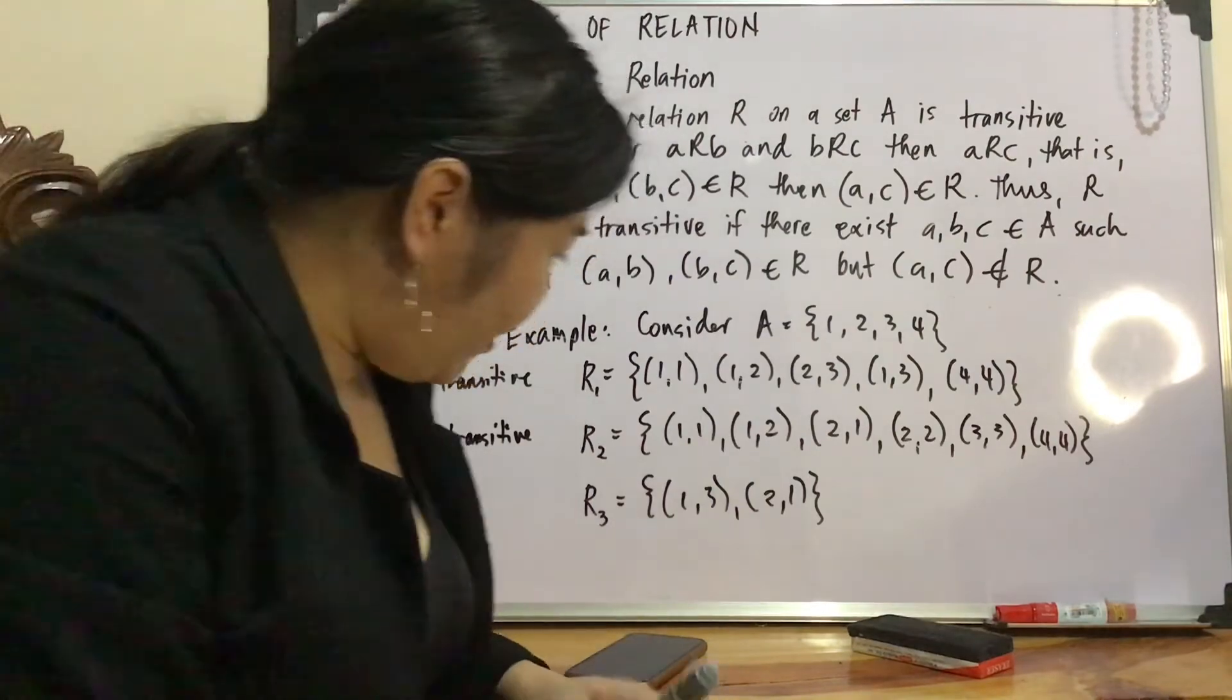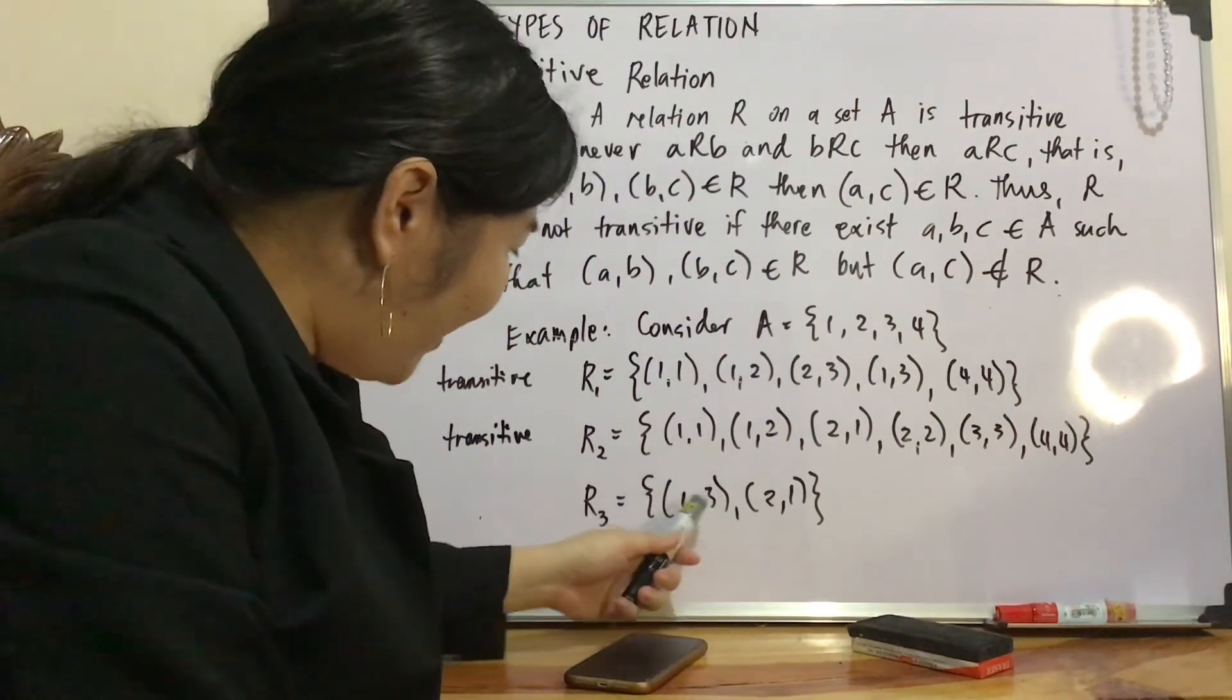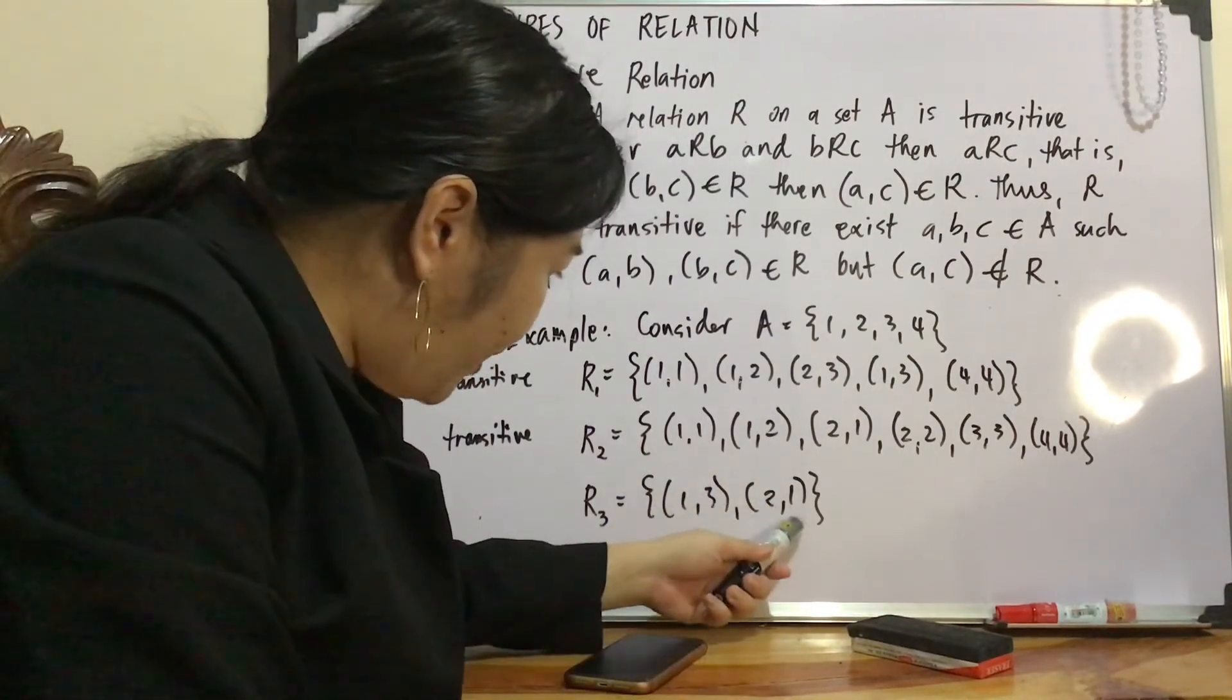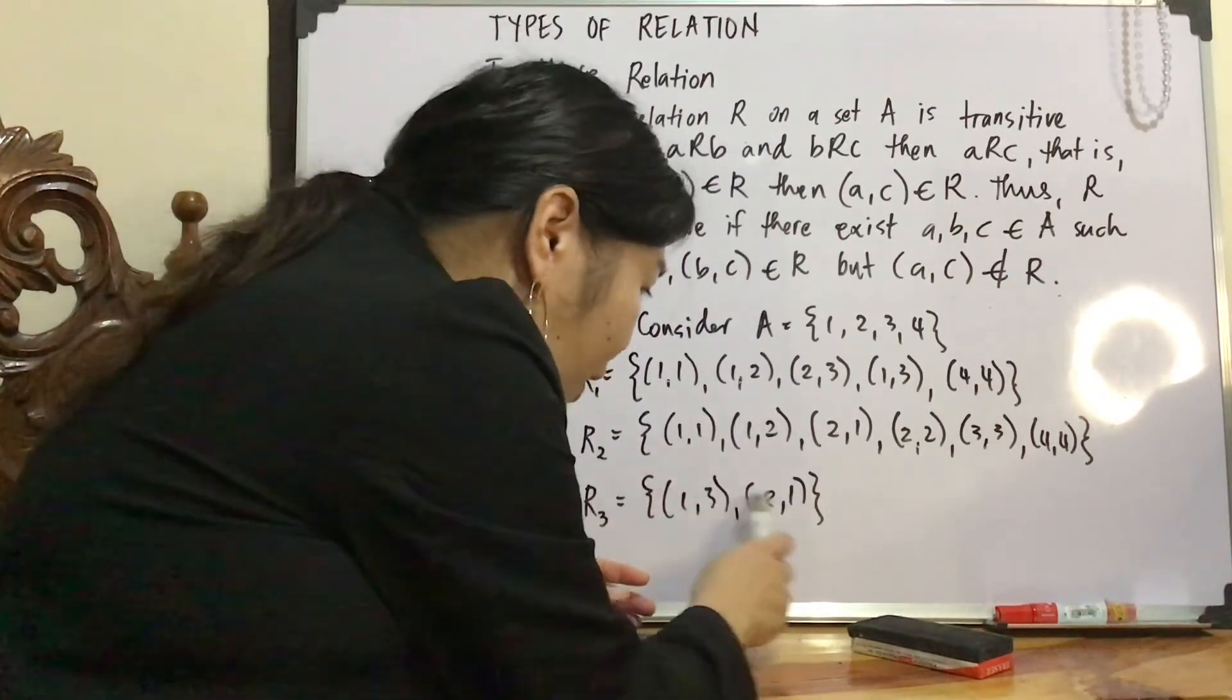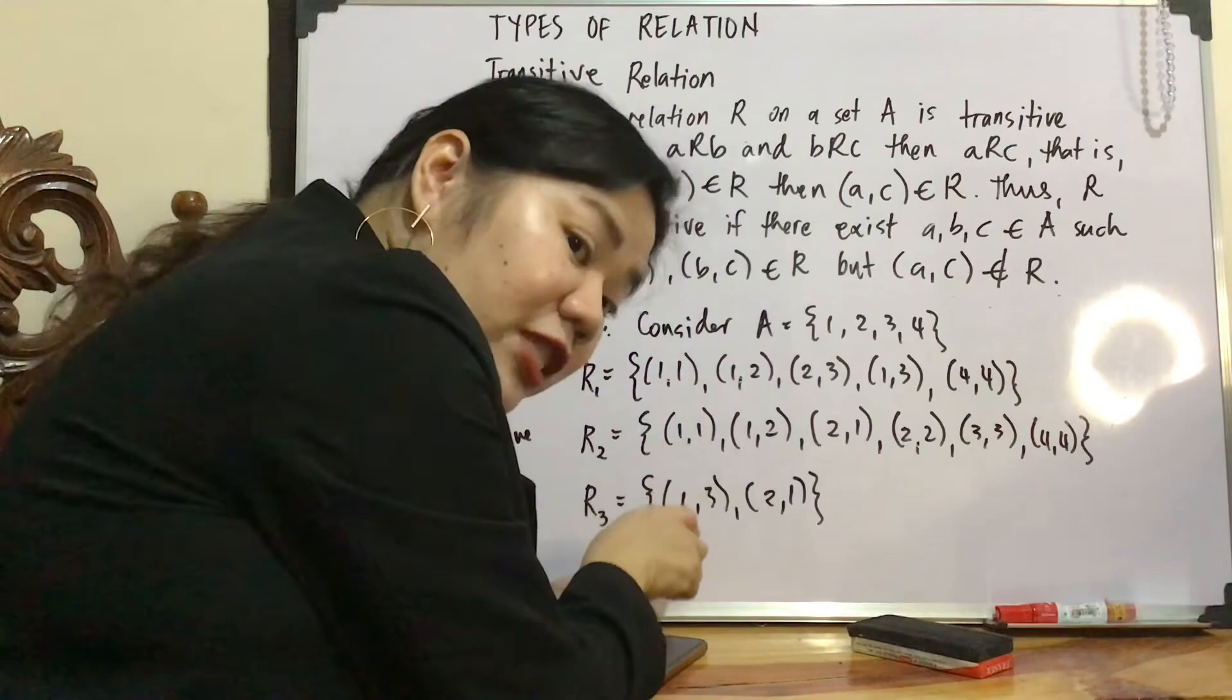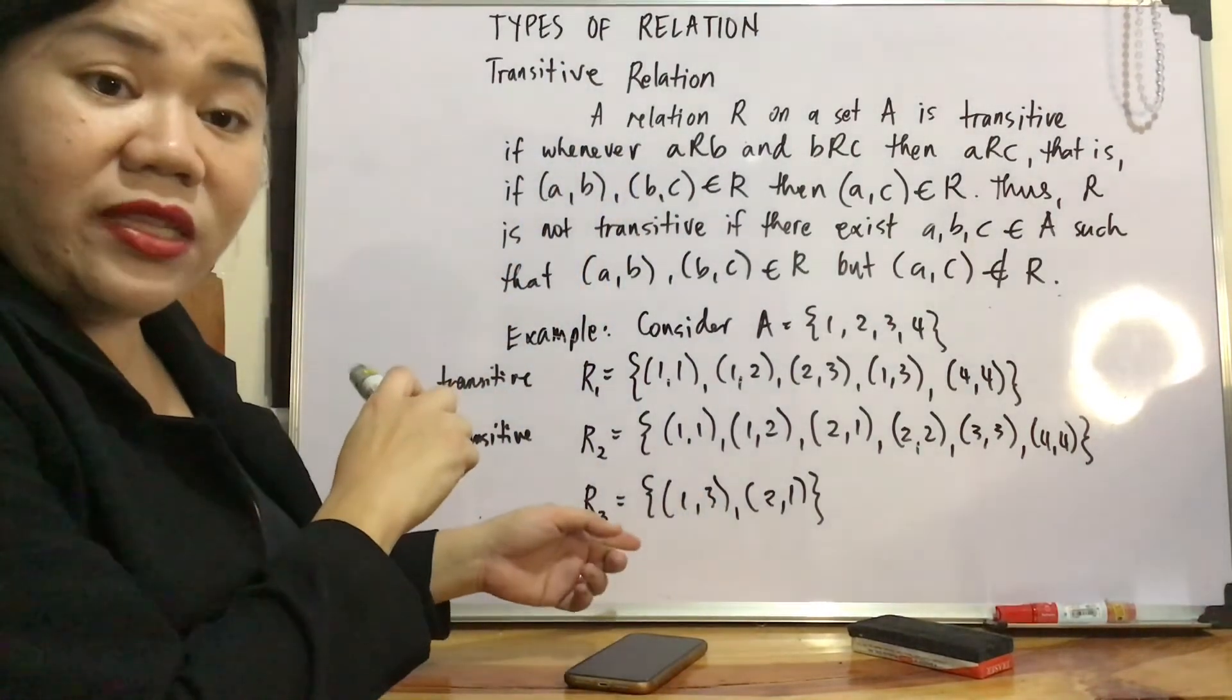Let's look at R3. Okay? So (1,3), (2,1). No? But you switch it, no? (2,1), (1,2). This must contain (2,3) for this to be transitive.